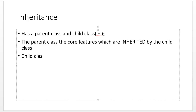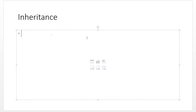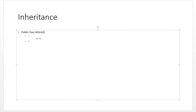A child class has all the features of the parent class. So if we're going to define a vehicle while programming, we create a class — public class Vehicle — and then inside there we define our constructor, which will also be called Vehicle.